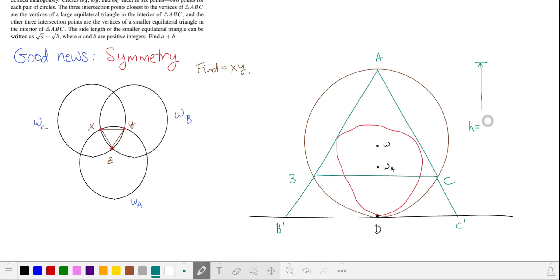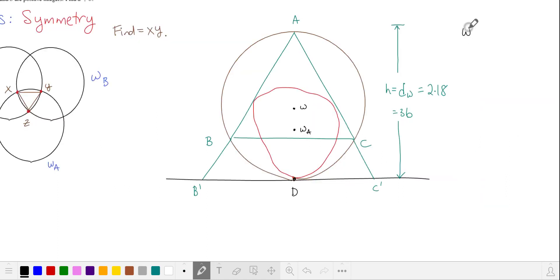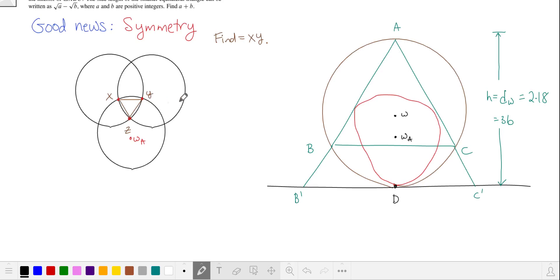Note that the height of this equilateral triangle is the diameter of circle omega, which has radius 18. So this distance is 36. Let's let omega be at the origin, and we can find the coordinates of the centers of our other three circles. Taking advantage of our symmetry, we note that omega is also the center of this equilateral triangle, x, y, z.